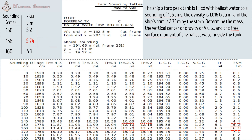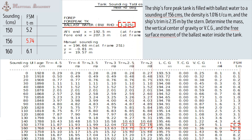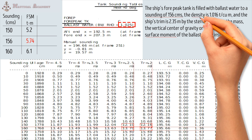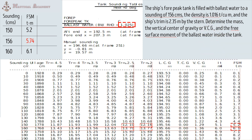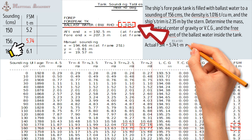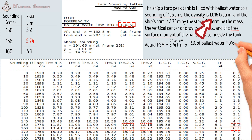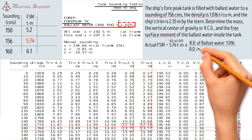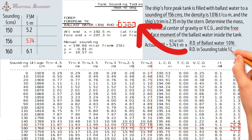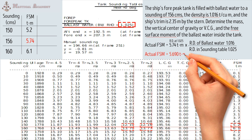But if we look at the sounding table, the given values below are obtained based on the relative density of the ballast water of 1.025. However, the relative density of ballast water that has been filled into the four-peak tank is 1.016. So we will make some corrections. The actual free surface moment is equal to 5.74 ton meter times the relative density of the ballast water inside the tank, which is 1.016, divided by the relative density specified in the sounding table, which is 1.025. So the actual free surface moment of the ballast water is 5.69 ton meter.